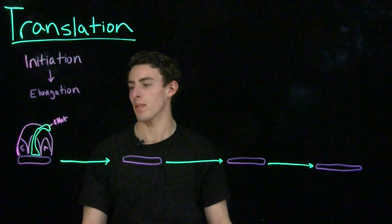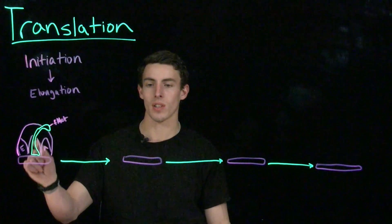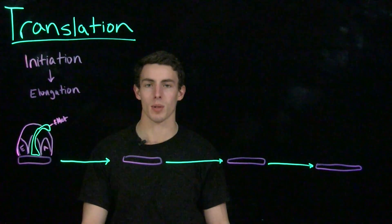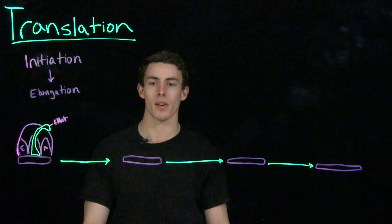At the end of initiation, our informal methionine on our charged tRNA will be located in the P site of the 70S ribosomal complex, or if it's a eukaryotic cell, it will be in the P site of the 80S complex.